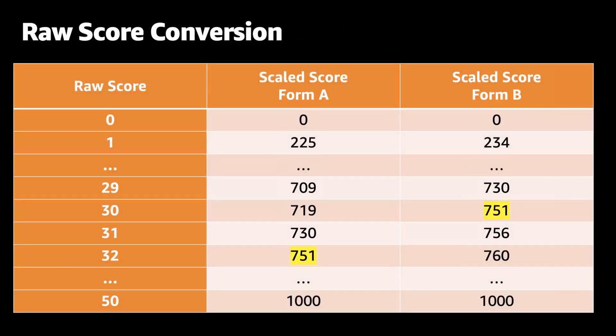What scaled scoring does is try to equalize the scores when one form may be slightly more difficult than another. Here's an example of two forms for the same exam. The raw score represents the total number of questions out of 50 the candidate answered correctly, with each question being awarded one point. The table shows how the raw score translates to the scaled score for each of the two forms. A candidate who takes the exam and is presented with the questions on form A needs to answer 32 questions correctly to meet the passing scale score of 750.